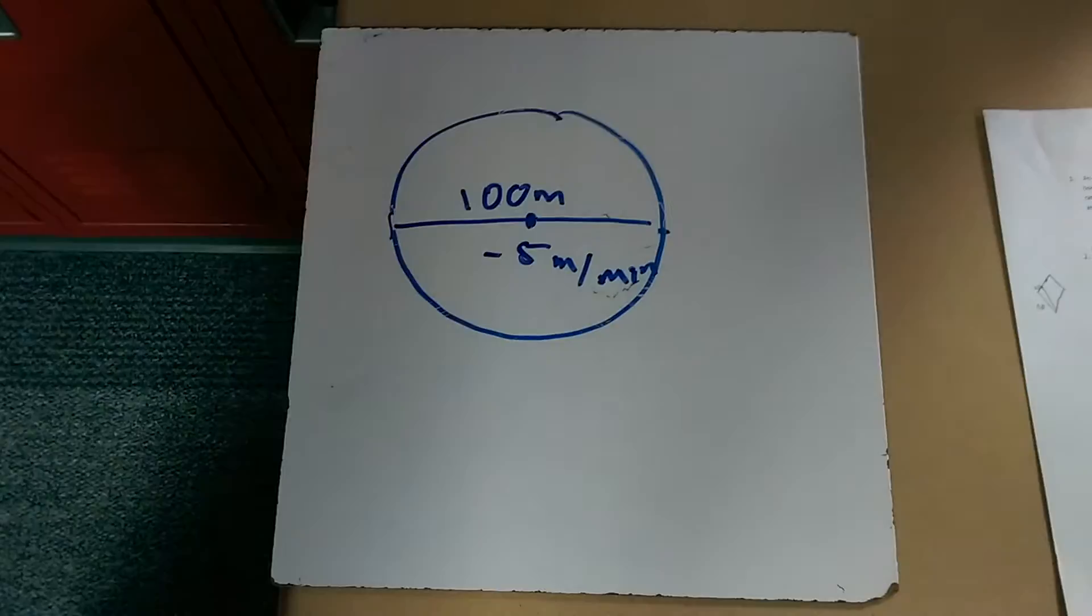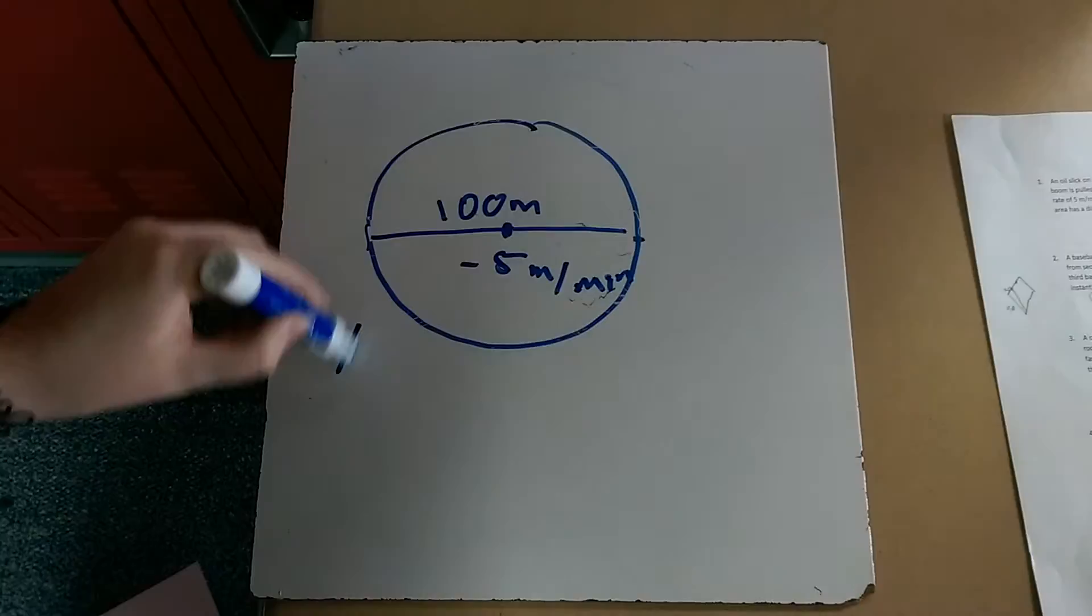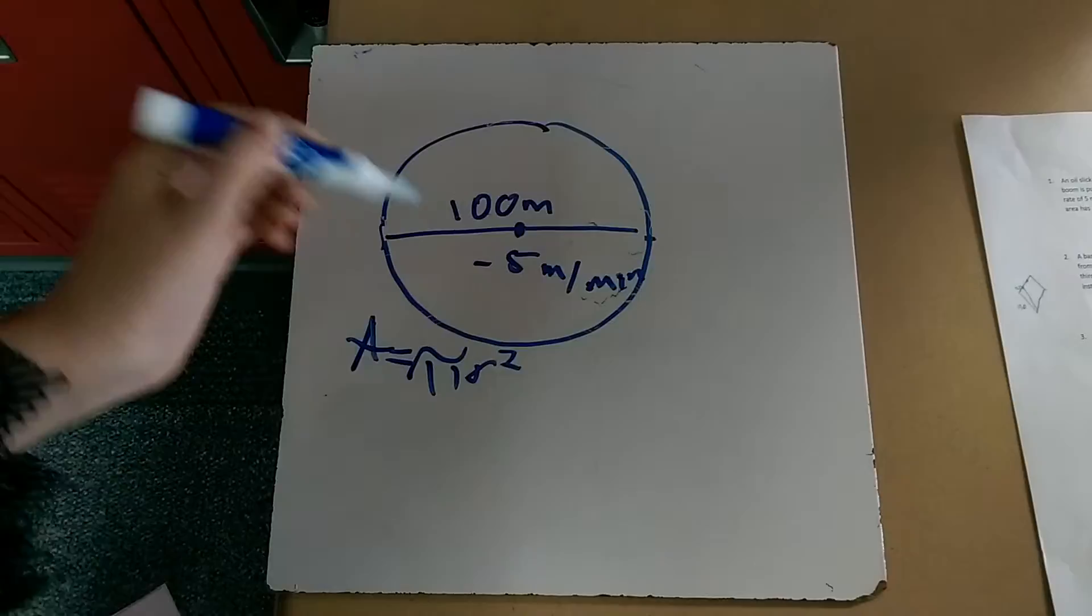Okay, so to find this, we need to use the area formula, which is pi r squared. And next we're going to find the derivative.